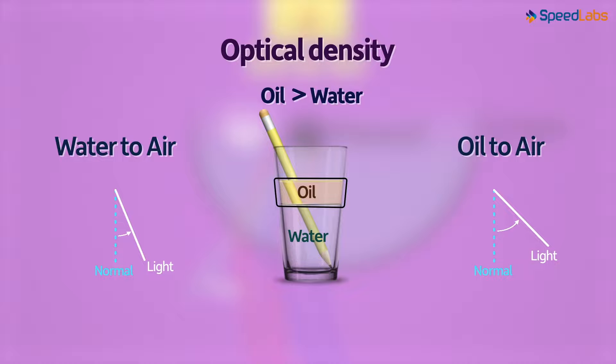The light bends more when travelling from oil to air than it does from water to air. And the simple reason is because the optical density of oil is more than that of water.